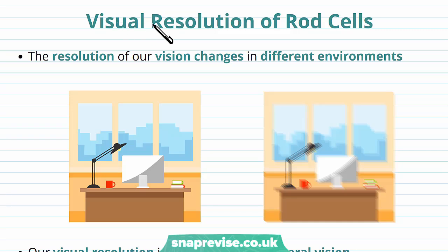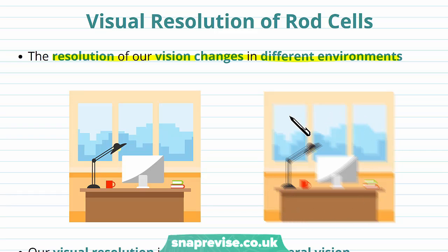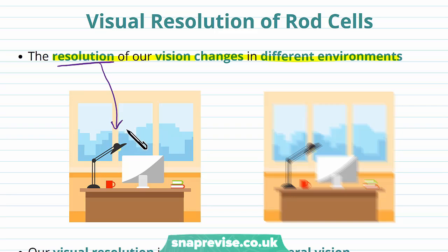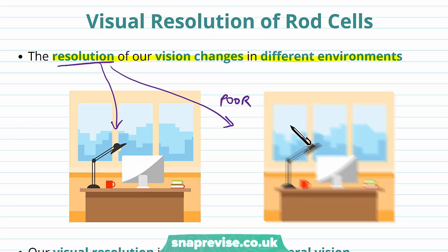There are different resolutions for the rod and cone cells, and we need to understand why they have these different resolutions. The resolution of our vision changes depending on what environment we're in — sometimes the resolution is bad, blurry and non-focused, and sometimes it's very good. Resolution basically refers to how clearly two objects are separate. If it's sharp and focused we can see all the individual objects; if the resolution is poor, objects are less well defined and it's harder to distinguish specific points.